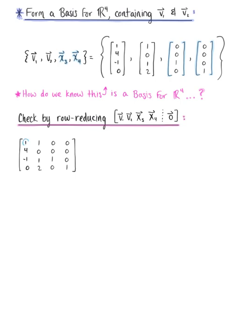Taking our first pivot position, we eliminate entries below it. We do minus 4 times the first row plus the second row, and add the first row to the third row. This leaves us with the row equivalent matrix: first row (1,1,0,0), second row (0,-4,0,0), third row (0,2,1,0), and the fourth row remains as is.